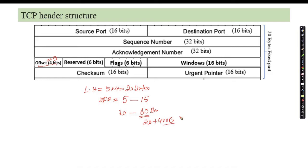The next field is the reserved field. This 6-bit reserved field is not normally used in the TCP header; it is kept for experimental work. If someone wants to design a new protocol or new functions based on TCP, they can make use of these 6 bits. Normally in the TCP header, all these bits are set to 0.